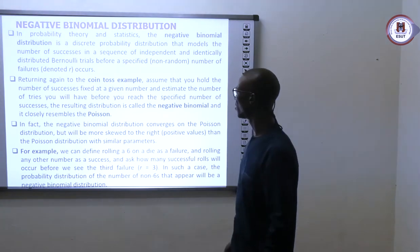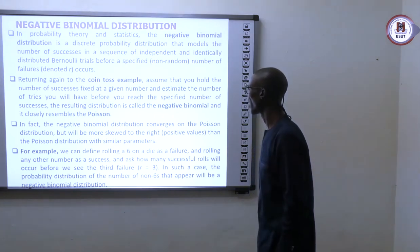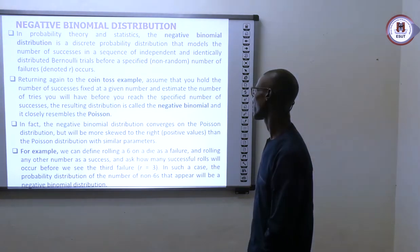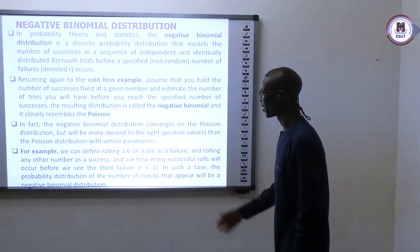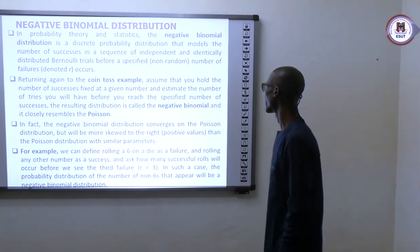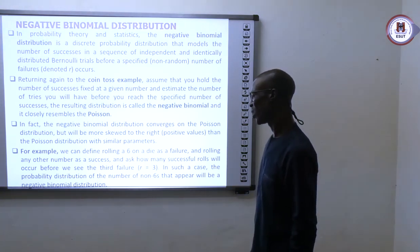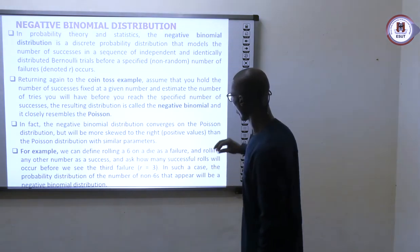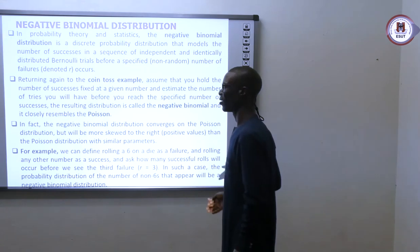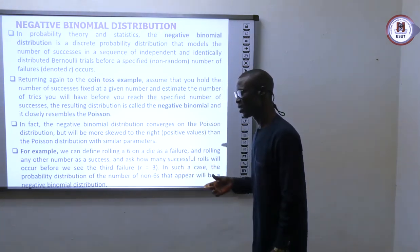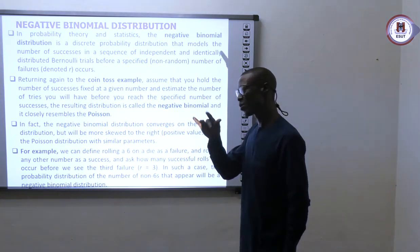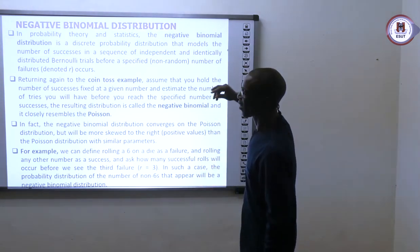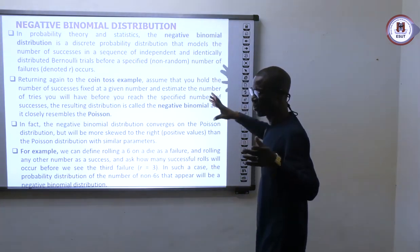So we have negative binomial distribution. In probability theory and statistics, the negative binomial distribution is a discrete probability distribution that models the number of successes in a sequence of independent and identically distributed Bernoulli trials before a specified non-random number of failures. In a binomial distribution, we always have a number of successes (p) and a number of failures (q).